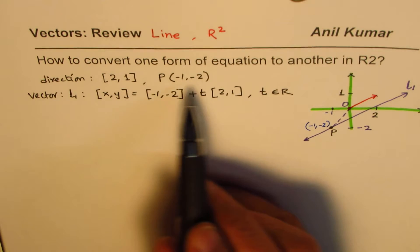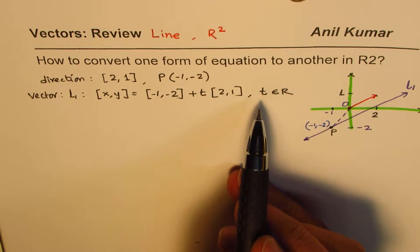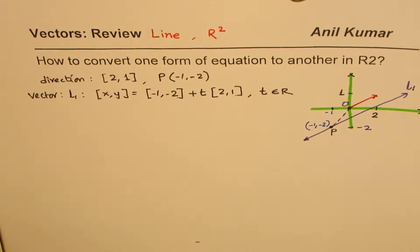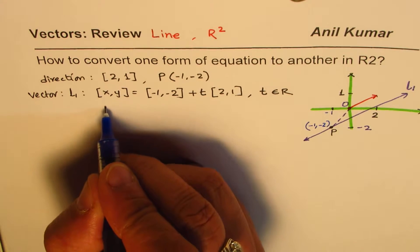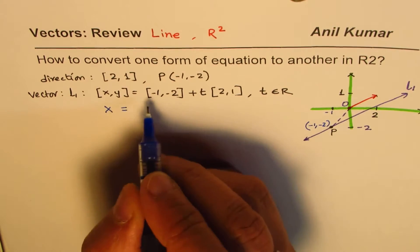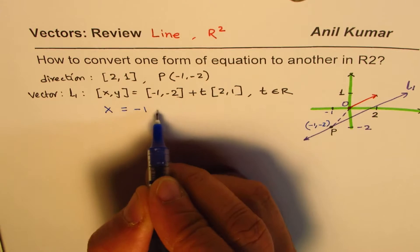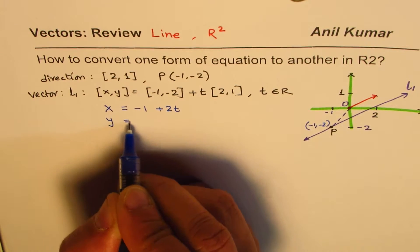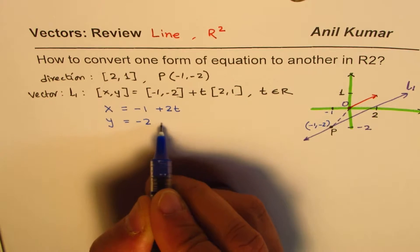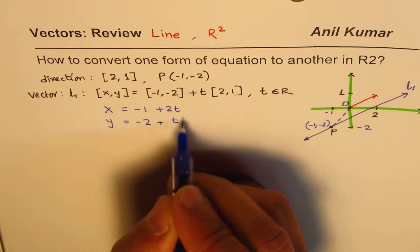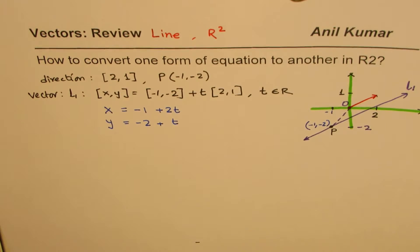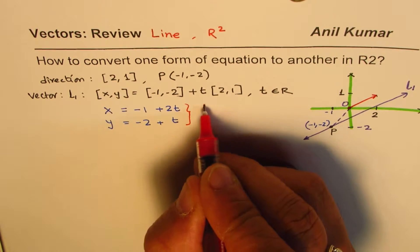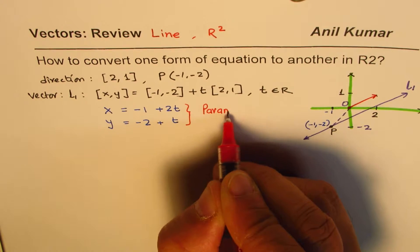We could write this vector equation in different forms. If we expand it, we get: x equals minus 1 plus 2T, and y equals minus 2 plus T. If we write it in this form, then we call this the parametric equation.